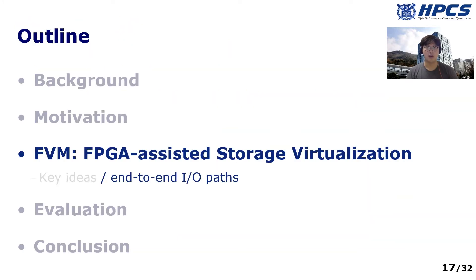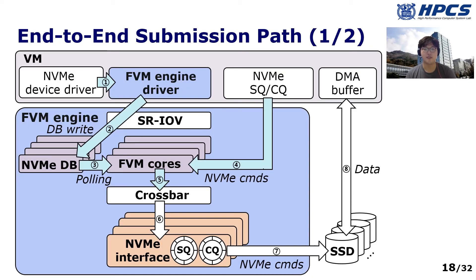Now I will explain the end-to-end I/O paths. This figure shows the end-to-end submission path. First, when the guest OS submits an I/O request, the guest FVM engine driver intercepts it and writes the submission tail pointer to FVM engine, indicating the new NVMe commands to be executed. The FVM cores then poll the doorbell registers and process the guest I/O operations at the hardware layer. At step 4, the FVM cores access the submission queue in the guest memory space and read the submitted commands through the DMA engine.